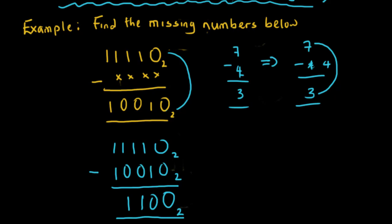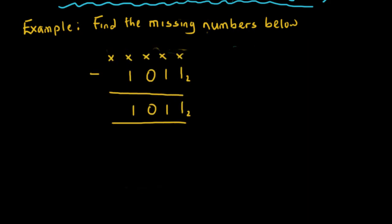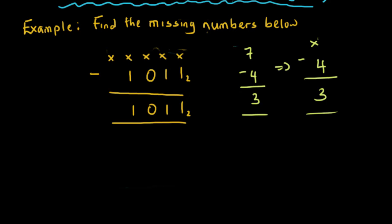To get the asterisk in the middle, all I need to do is take the first number minus the last number. Let's take another example. We have an asterisk on top minus 1011 in base two to give 1011 in base two. Using the seven minus four illustration: seven minus four is three. If the top number was omitted, I find it by saying three plus four, which gives me seven. That's what we'll do here.